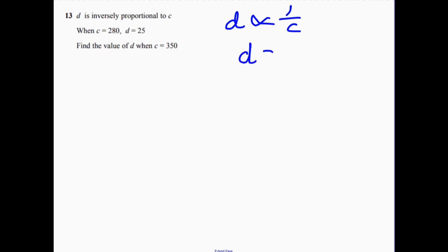So that means that D is equal to something multiplied by 1 over C. I don't know why the red bit's in there. Right.